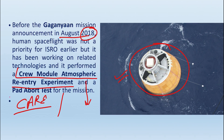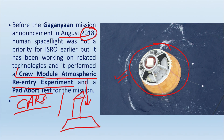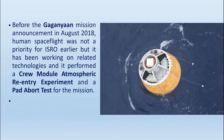The crew module is the compartment in which astronauts are present, and they can land in the ocean. The second experiment is the Pad Abort Test, which is related to the launching pad. If there is a problem in the rocket during launch, it will abort the mission, and this test ensures the astronauts are safely ejected. These two experiments are very important for this mission and have already been conducted.